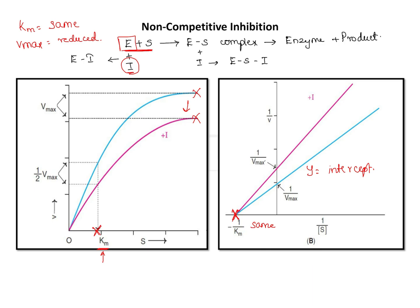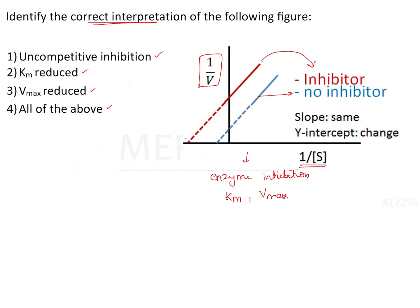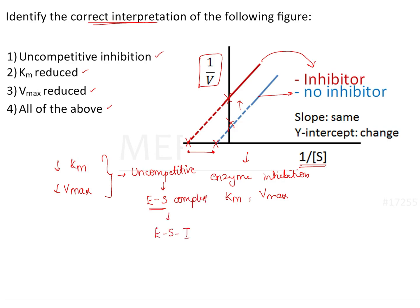Looking at the graph in the question, there is a change in both the x-intercept and the y-intercept, indicating that both Km and Vmax are decreased. This corresponds to uncompetitive inhibition, where the inhibitor binds with the enzyme-substrate complex and has no affinity for the free enzyme. It only binds with the enzyme-substrate complex, leading to formation of an enzyme-substrate-inhibitor complex.